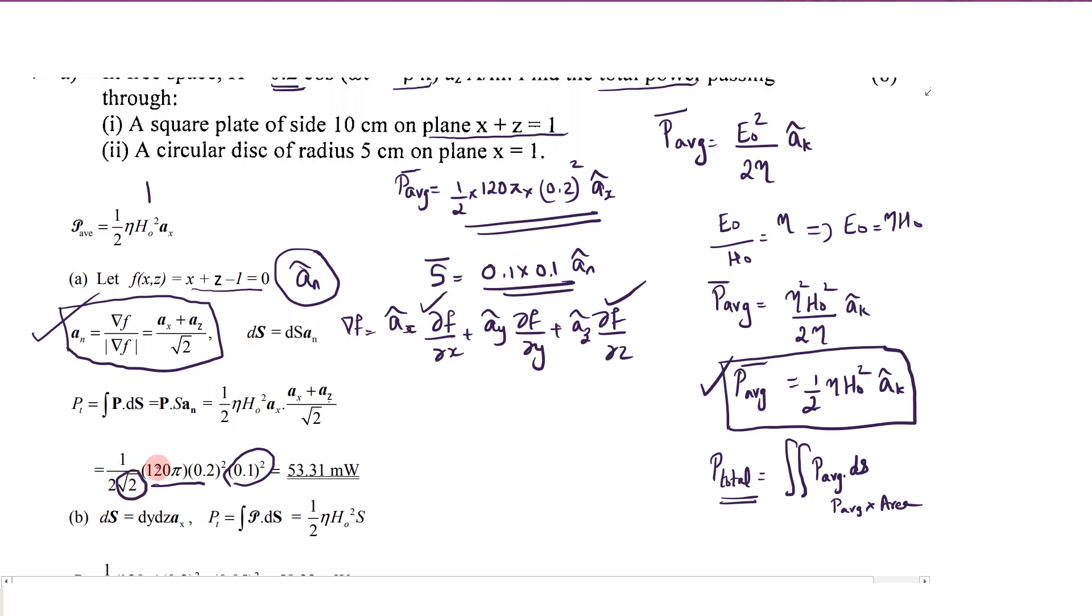So this is the unit vector. In addition to this you have to give into 1 divided by root 2. You are taking the dot product, so you take only ax component because ax dot az will be 0. You are just taking the product of x components of p average and an, and you will be getting the value. You can check the answer.